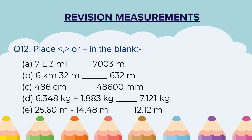Question 12: Place less than, greater than or equal to in the blanks. The first three are conversion questions where you convert and then compare. Parts D and E require you to solve an addition or subtraction sum and then check your answer. A part: 7 liters 3 milliliters compared with 7,003 milliliters. B part: 6 kilometers 32 meters compared with 6,032 meters. C part: 486 centimeters compared with 48,600 millimeters. D part: 6.348 kg plus 1.883 kg compared with 7.121 kg. E part: 25.60 meters minus 14.48 meters compared with 12.12 meters.